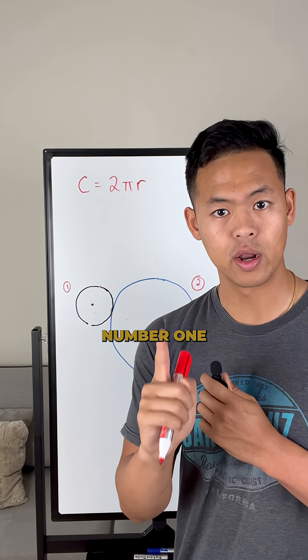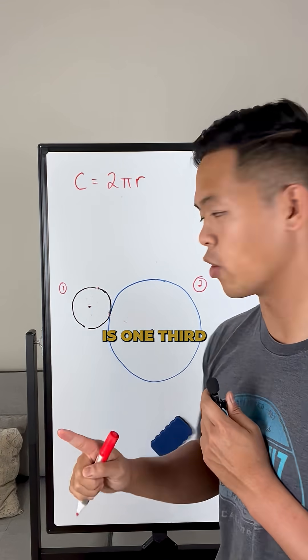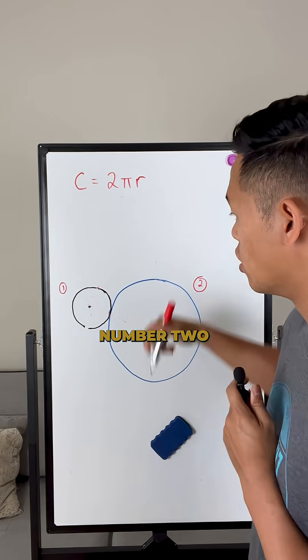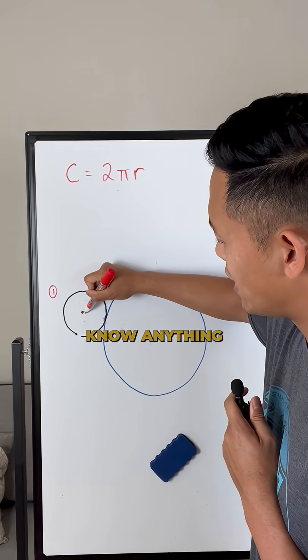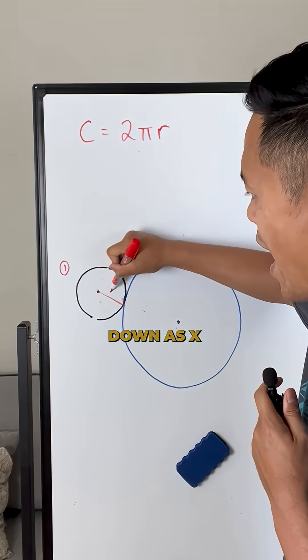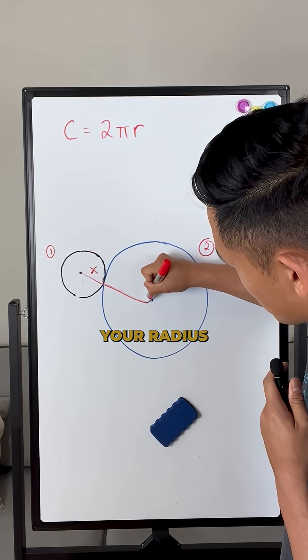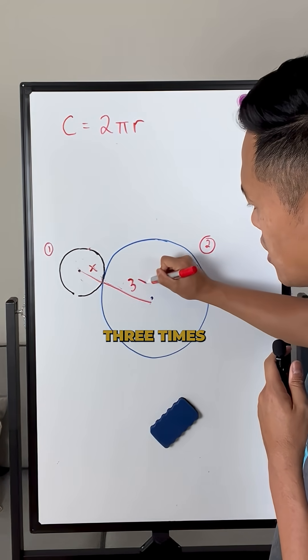We know that for circle number one, the radius is one third that of circle number two, which means that because we don't know anything about the radiuses, we can just write this down as X for the smaller one. Your radius for the big one is three times X.